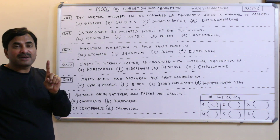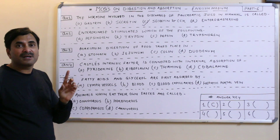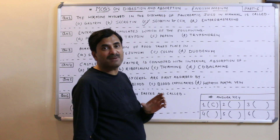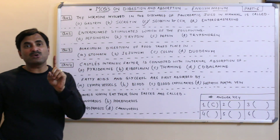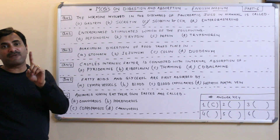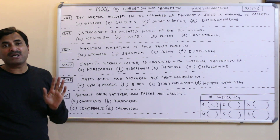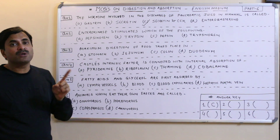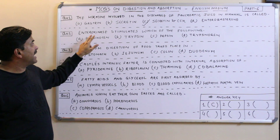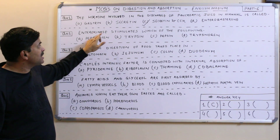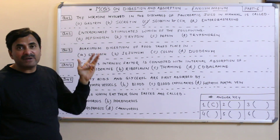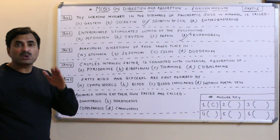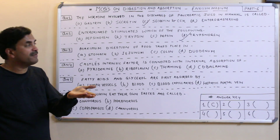Question number two: enterokinase stimulates which of the following? In the physiology of digestion, there is an inactive enzyme called trypsinogen, and trypsinogen is converted into the active protein-digesting enzyme trypsin by the action of enterokinase.